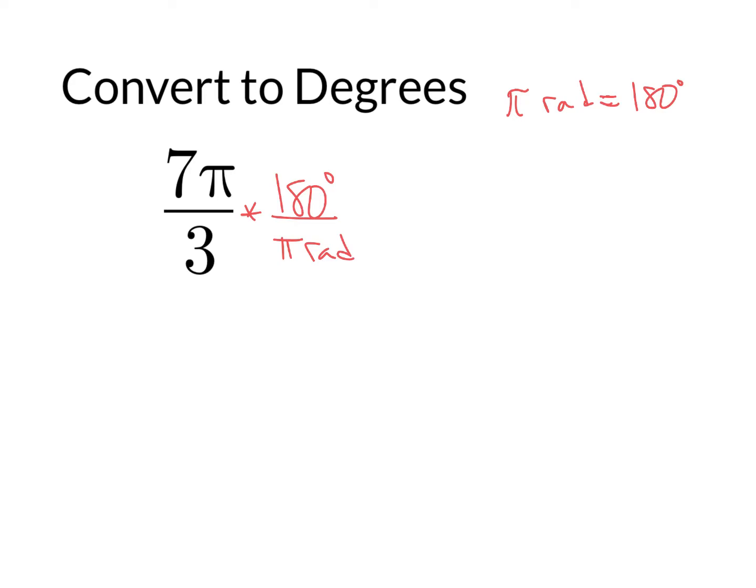The reason we want the π radians in the denominator is to get the π's to cancel, and the units will cancel as well. So we're left with this expression of 7 times 180 degrees over 3, and we can do a little simplifying there. We know that 3 goes into 180 60 times, so 7 times 60 degrees is 420 degrees.